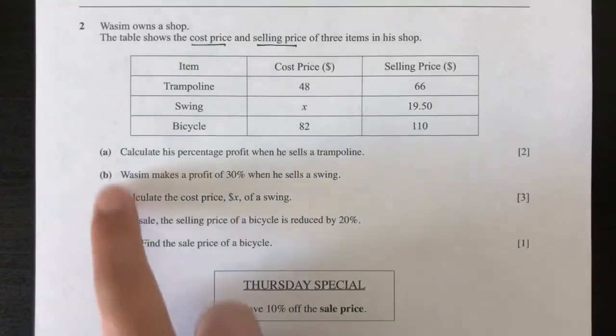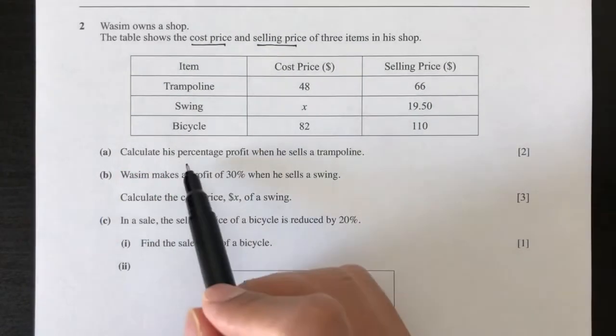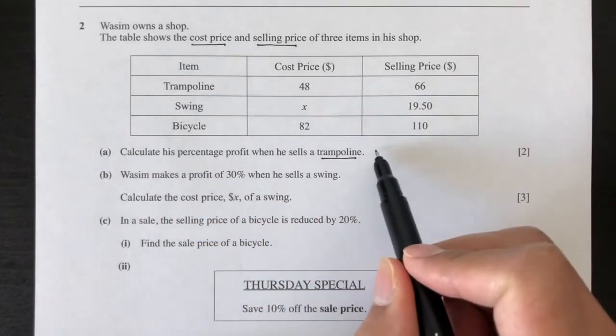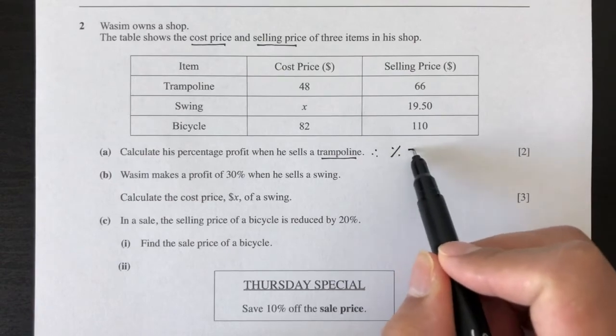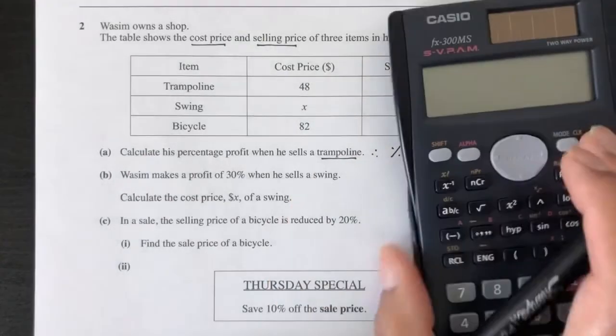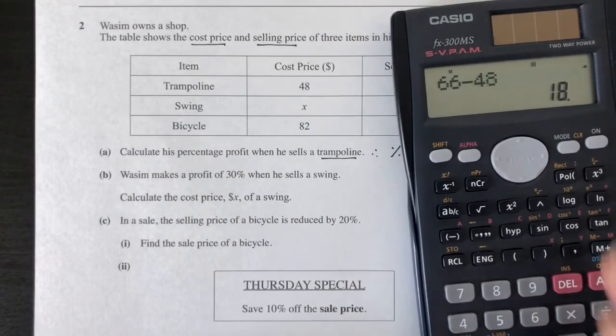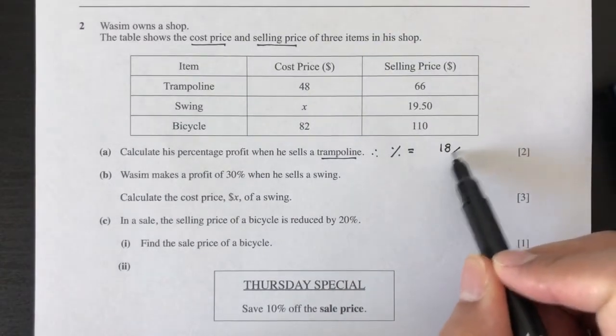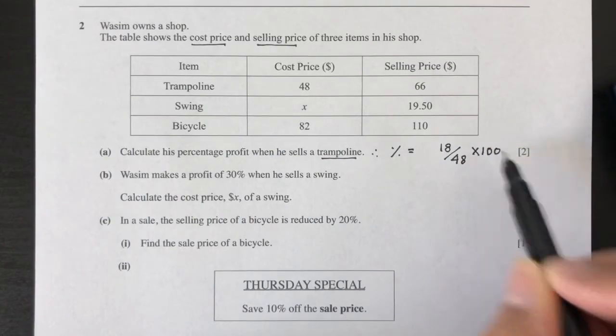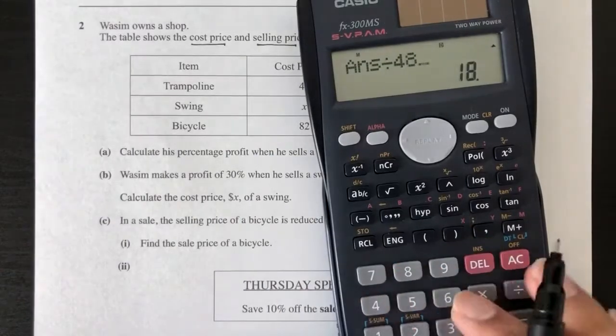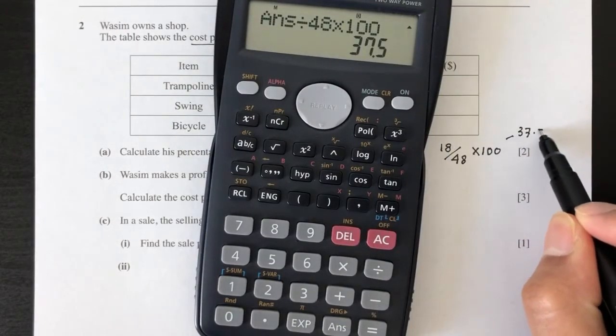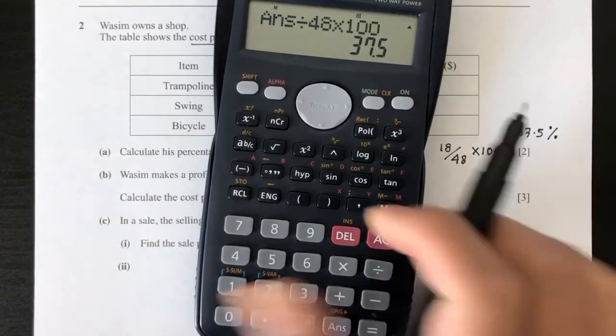Now question number one, part A: Calculate his percentage profit when he sells the trampoline. What is the profit? For percentage profit, you have to first find the profit, which is 66 minus 48. That will be your profit, which is 18. Divide by your initial amount, which is 48, that's your cost, times 100 for your percentage. That should be 37.5% for your profit.